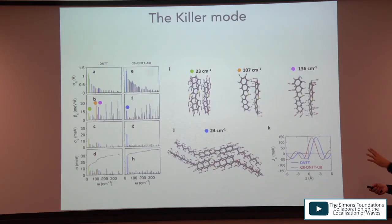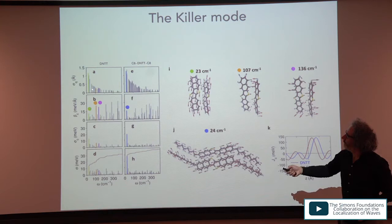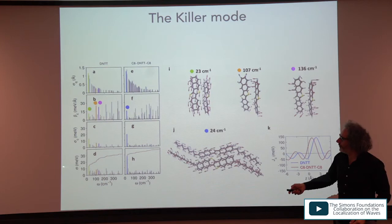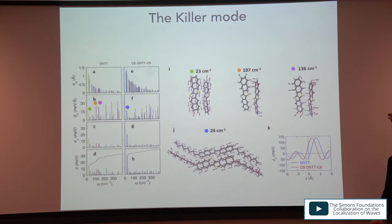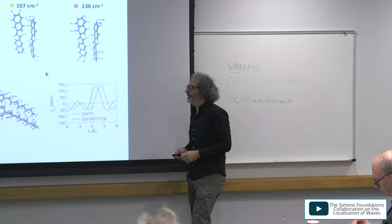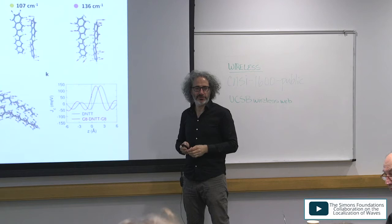Regarding how to reduce fluctuations: looking at all phonon modes and their contribution to total disorder, there is one dominant spike — always the lowest-frequency mode, typically the sliding mode — contributing about 80% of the total disorder. The remaining ~300 modes contribute only about 20%.